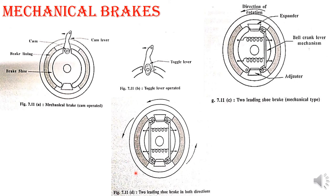In summary, the mechanical brake types are: cam-operated type and Girling mechanical brake type — the Girling type has one arrangement for forward direction and another for reverse direction.